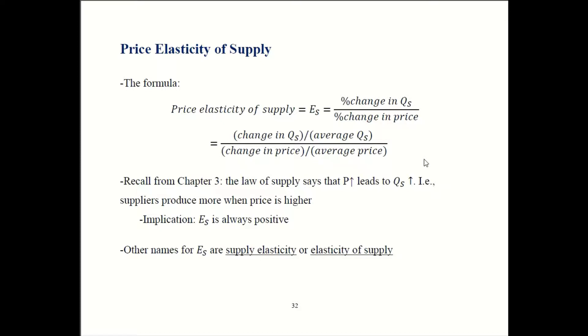Now the law of supply, another hugely important result from Chapter 3, tells us something about the price elasticity. It says that price increasing is going to cause quantity supply to increase. You should always get a positive relationship between price and quantity supply. You should always get a plus over a plus or a minus over a minus, so this thing overall is always going to be positive.